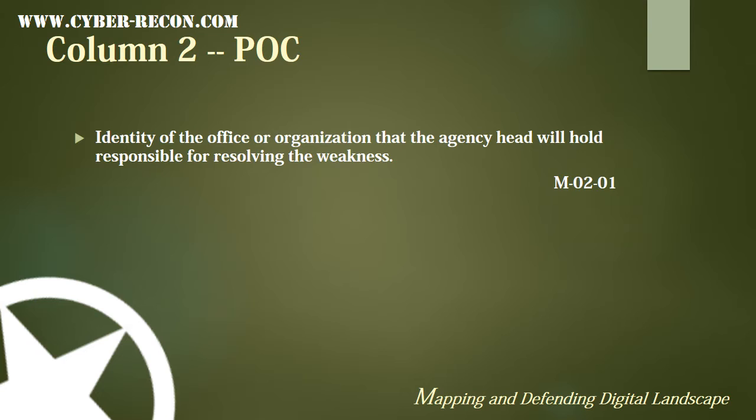Column 2 identifies the POAM point of contact — you will identify the office or organization that the agency head will hold responsible for resolving the weakness.